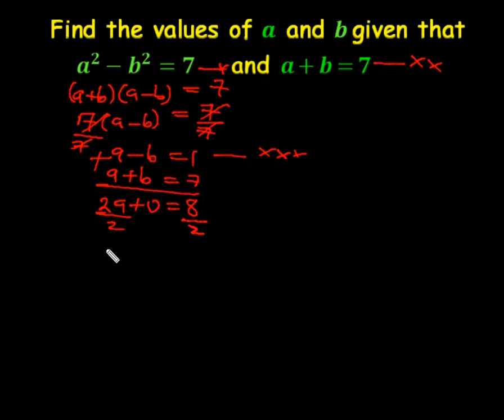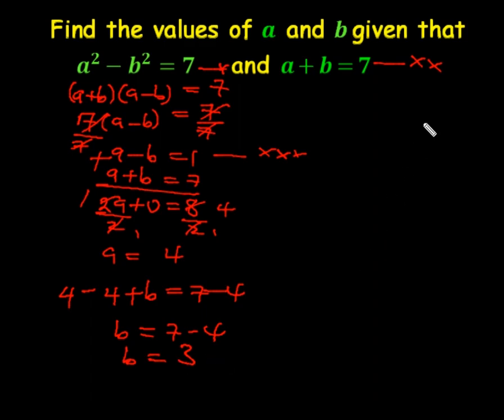Negative b plus b, that is 0, equals 1 plus 7, that is 8. We divide both sides by 2, so a is equal to 4. If we want to get b, we shall substitute a in star 2. Therefore, 4 plus b is equal to 7. We subtract 4 from both sides, and b is equal to 7 minus 4, so b is equal to 3.